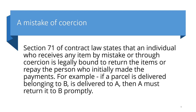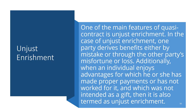The fifth provision is mistake or coercion. Section 71 of the Contract Act states that an individual who receives any item by mistake or through coercion is legally bound to return the item or repay the person who initially made the payments. For example, if a parcel belonging to B is delivered to A, then A must return it to B promptly. These are the five scenarios of quasi-contracts.